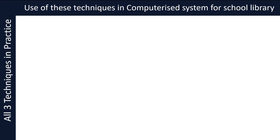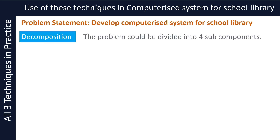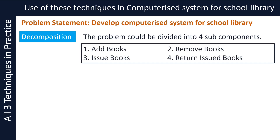Let's now take an example where we want to solve a problem with the help of a computer. Imagine you have to design a computerized system for your school library. Let's decompose the problem. The problem could be divided into four sub-components: add books, remove books, issue books and return issued books. Now you can concentrate on each of the components separately. If you feel each component needs further decomposition, then you can decompose each into even smaller sub-components, and keep doing this until you feel the problem is simple enough to handle.